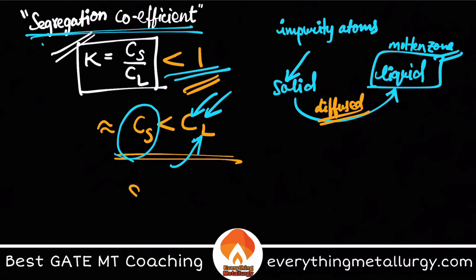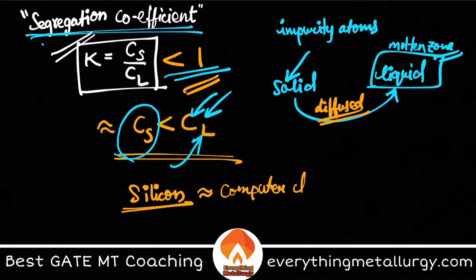Zone refining has many applications. This technique is used for the preparation of silicon, which is one of the most important materials used in computer chips. All important computer chip ICs are produced using this method.